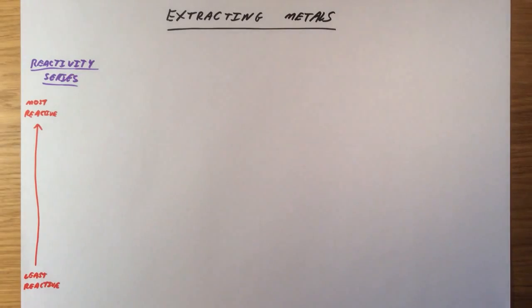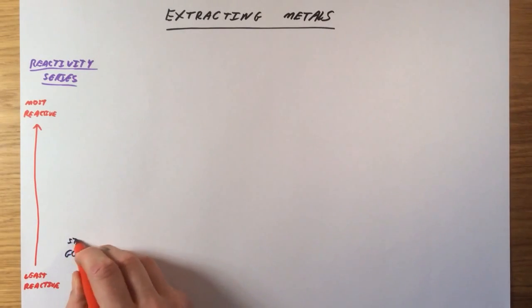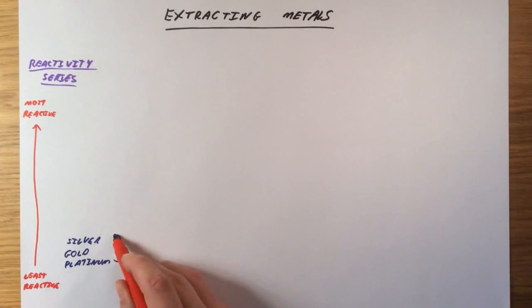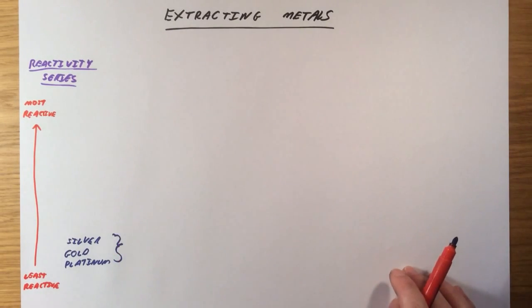The first group I'm going to talk about are the ones right down at the bottom, the least reactive ones. Down here we have metals such as gold, silver and platinum. These are all used to make jewelry. The reason for that is that they're incredibly non-reactive, they're nice shiny metals, they're quite rare in the Earth's crust. But even though they're quite expensive to buy, they're actually very easy to get out of the Earth's crust.